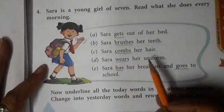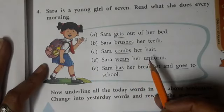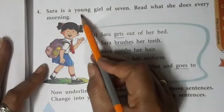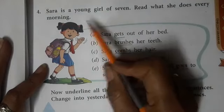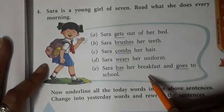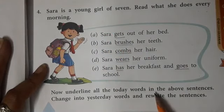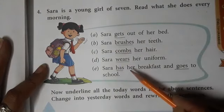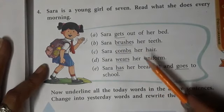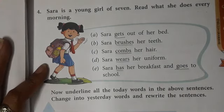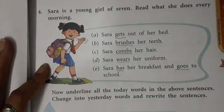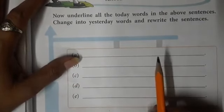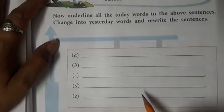You have to do exercise 4 in your book yourself as it is your homework. Sarah is a young girl of seven — read what she does every morning. Now underline all the today words in the above sentences, change them into yesterday words, and rewrite the sentences. The space is provided where you have to write these sentences. You have to change the today words to yesterday words and rewrite them again.